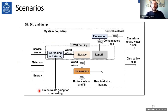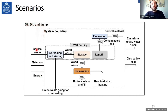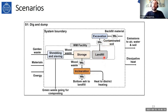We developed three different scenarios. The first scenario — dig and dump — describes the current situation: garden waste goes into the waste management facility, and after shredding it is stored, then transported about 120 kilometers north to another incineration facility to produce heat for district heating. The excavated contaminated soil is landfilled, and new inert material is used for backfilling at the excavation sites.